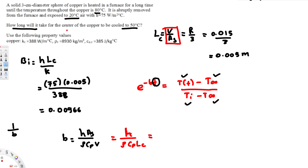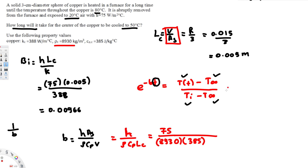Plugging in values: H is 75, divided by density rho which is 8930, times specific heat cp which is 385, times the characteristic length 0.005. Calculating this gives b equals 0.00436.